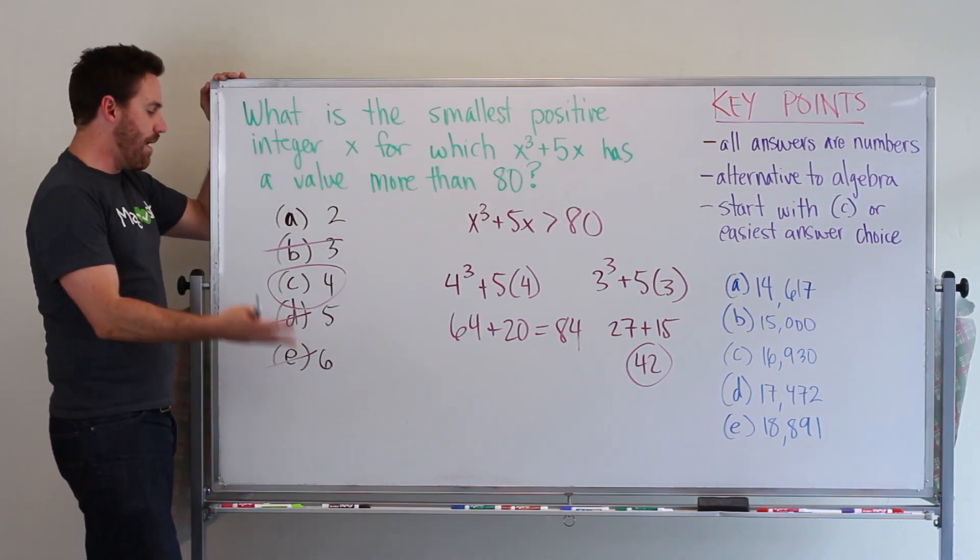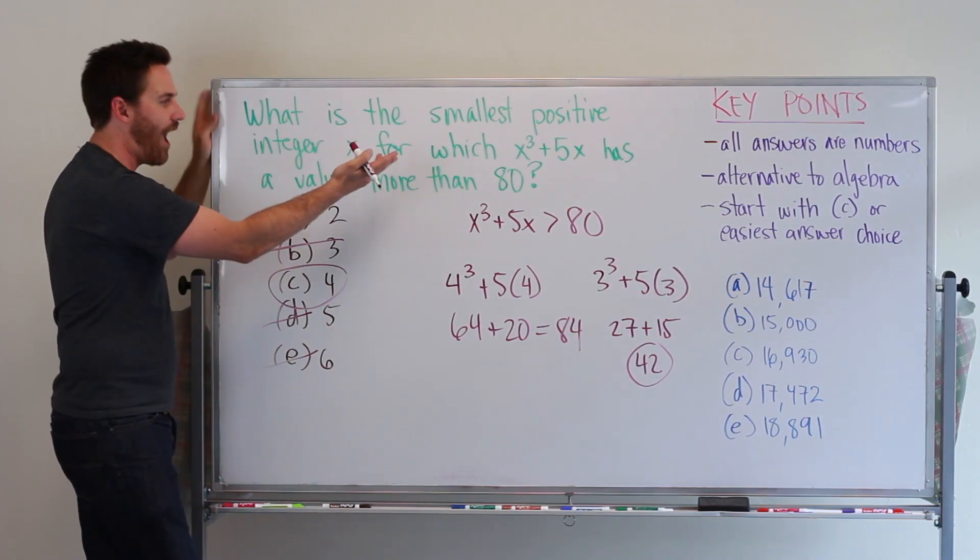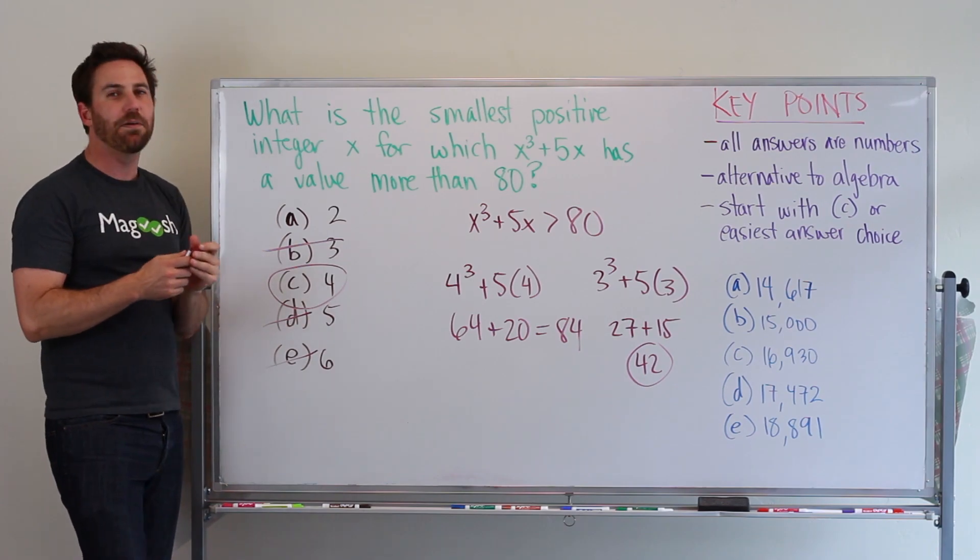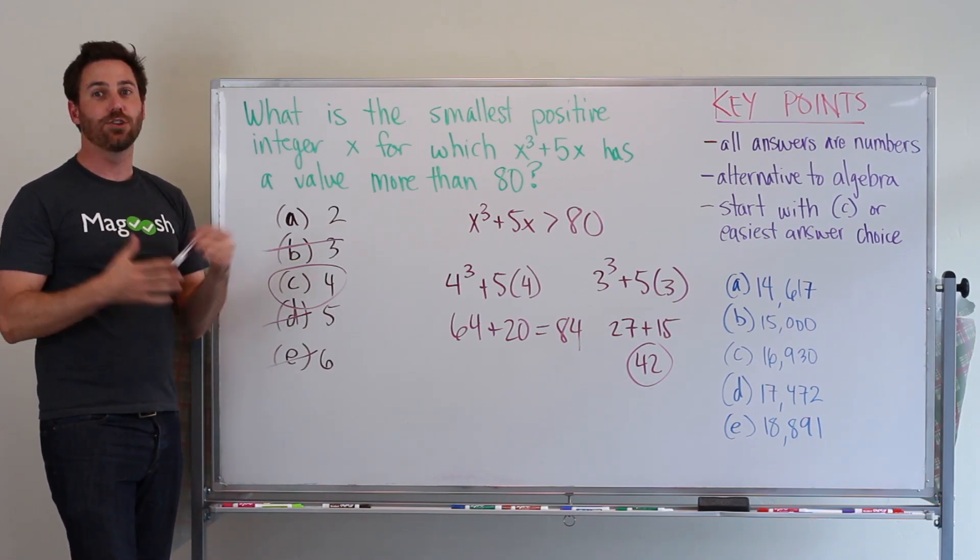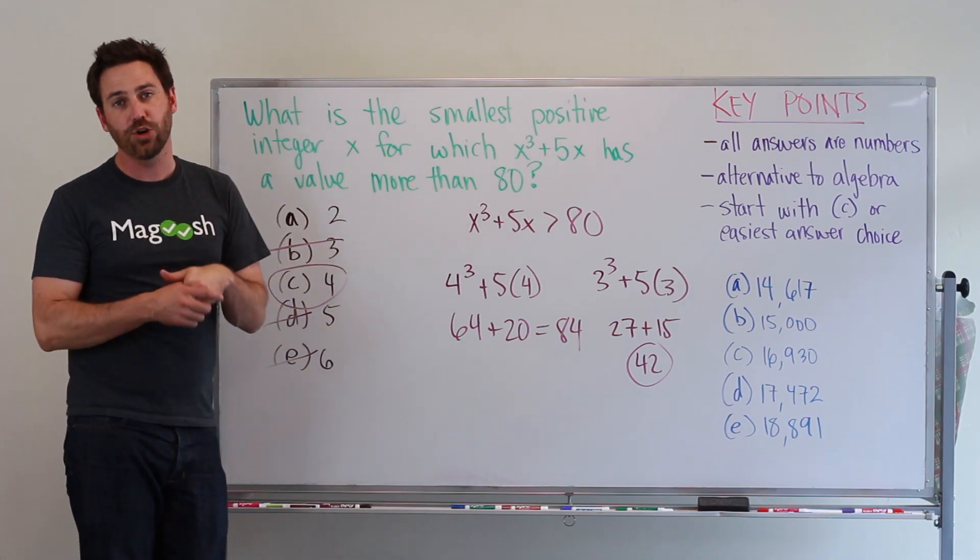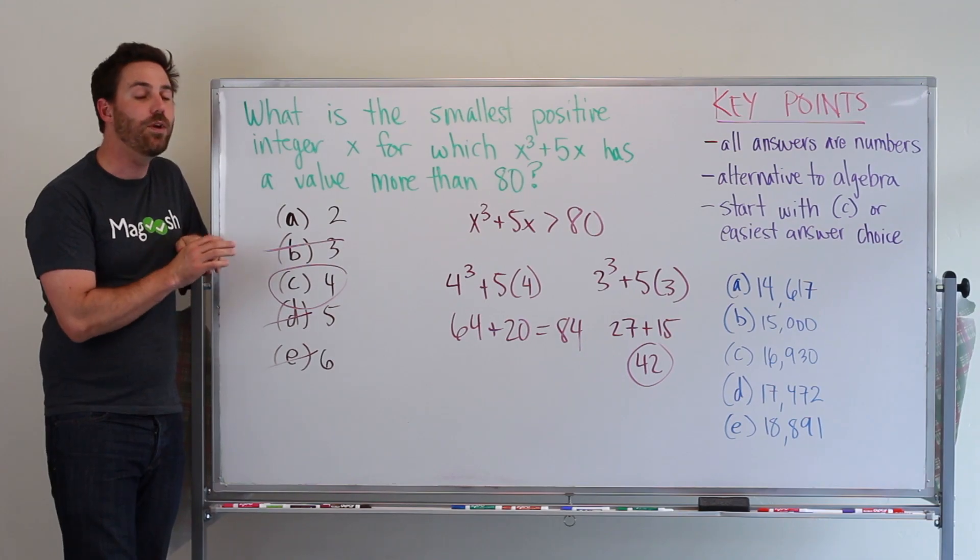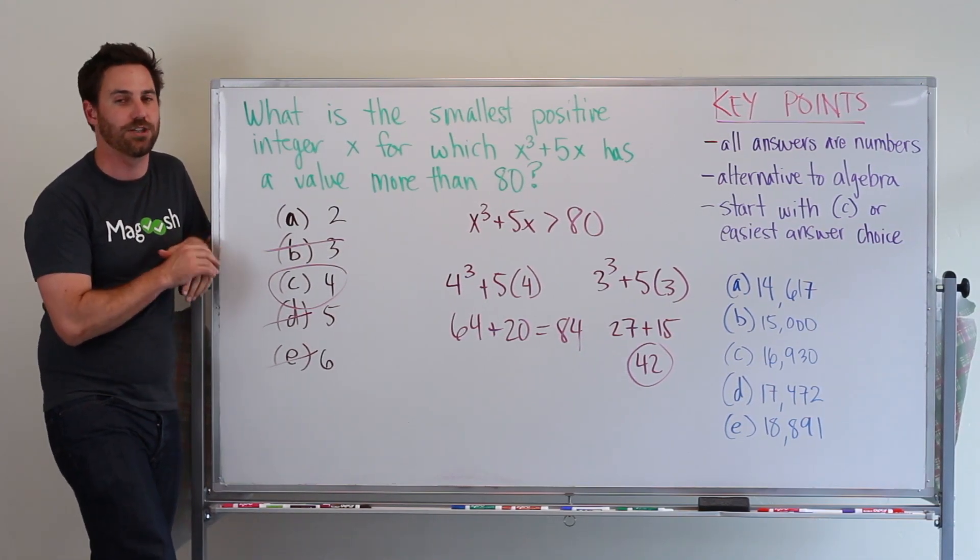So remember, backsolving: if you have numbers in the answer choices and you have algebra in front of you, think about plugging in numbers to arrive at an answer instead of churning and burning through an algebra equation. This can be a really efficient way to get through some of the questions on the GMAT.